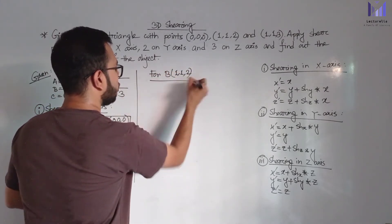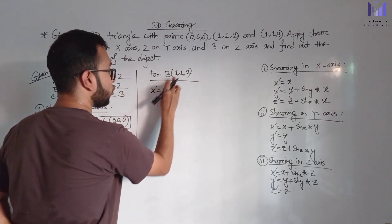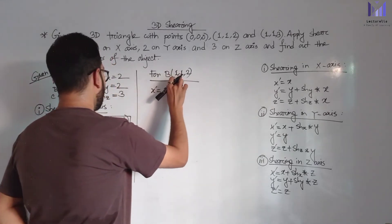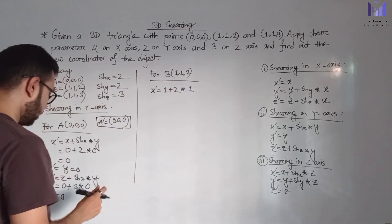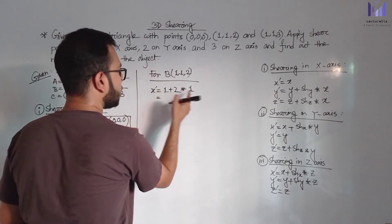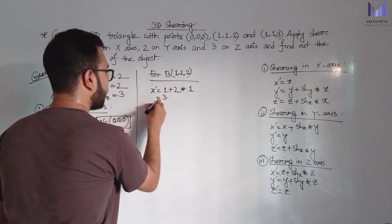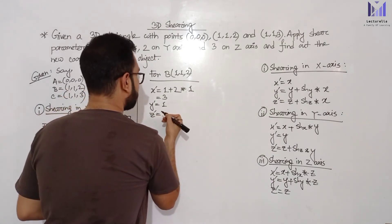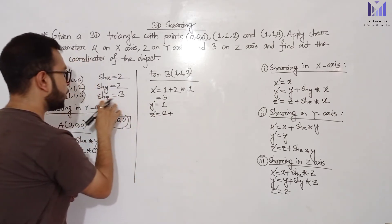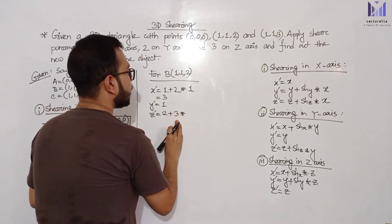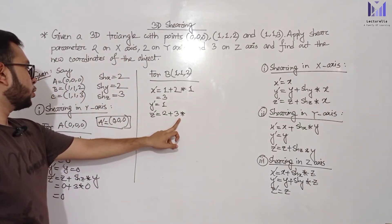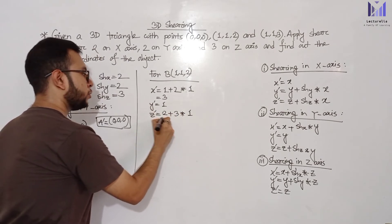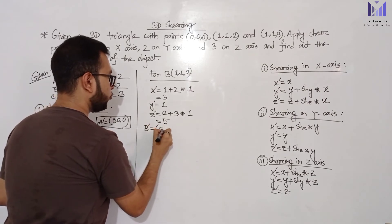For point B (1, 1, 2) under shearing in Y-axis: X prime equals X which is 1 plus shearing parameter X of 2 multiplied with Y which is 1 equals 3; Y prime equals old Y value which is 1; Z prime equals Z which is 2 plus shearing parameter Z of 3 multiplied with Y which is 1 equals 2 plus 3 equals 5. So B prime is (3, 1, 5).